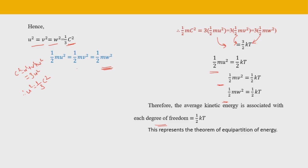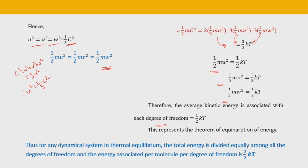For any dynamical system in thermal equilibrium, the total energy is divided equally among all degrees of freedom, and the energy associated per molecule per degree of freedom is half kT. This was the law of equipartition of energy.